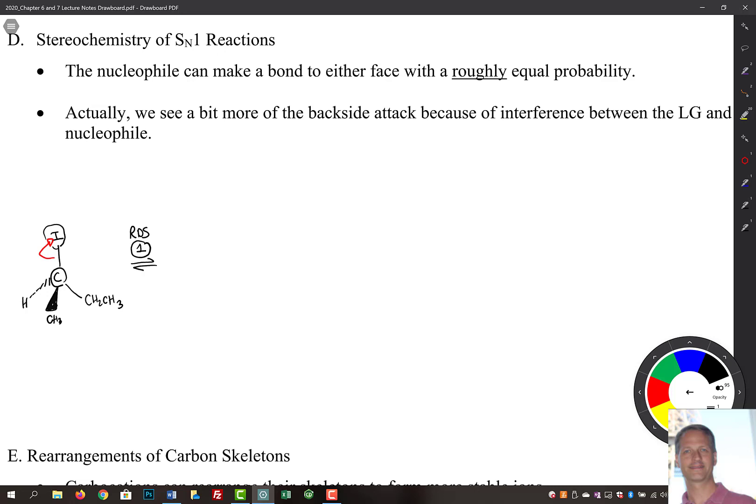Let's assume an SN1 is occurring. That's going to give us this intermediate. We have our carbon, then the ethyl, the CH3, and the H back here. Now we have a P orbital lobe here and another P orbital lobe down here. Let's put our plus charge in here. Remember that's a planar sp2 hybridized carbon.